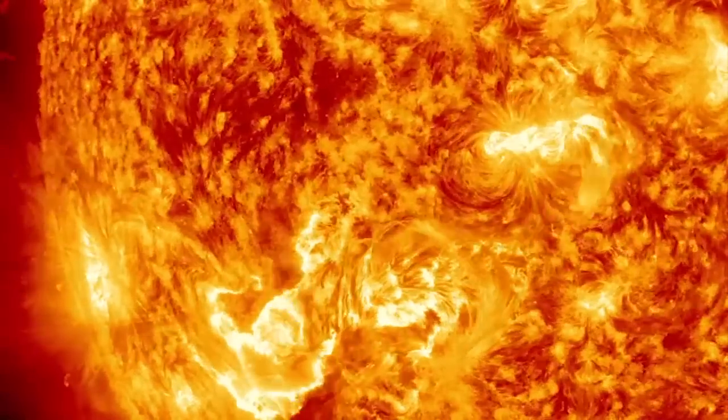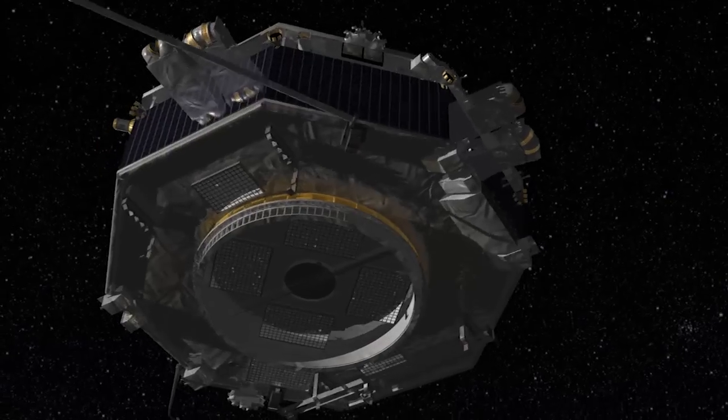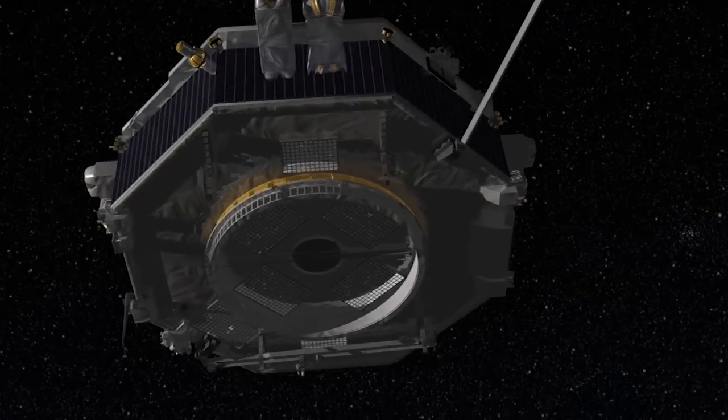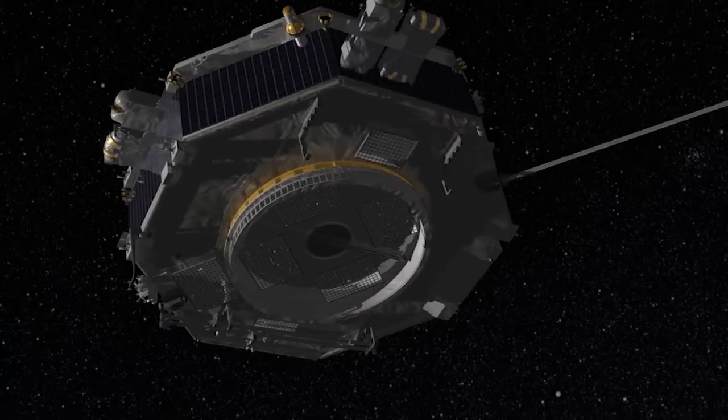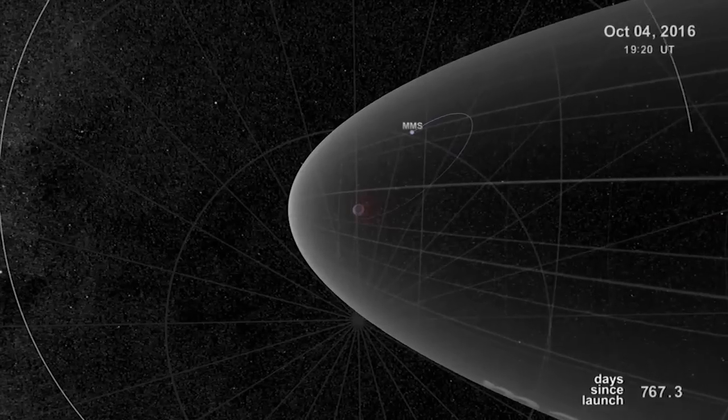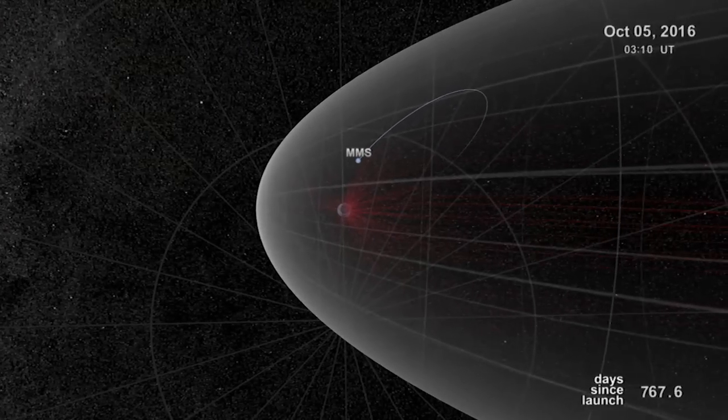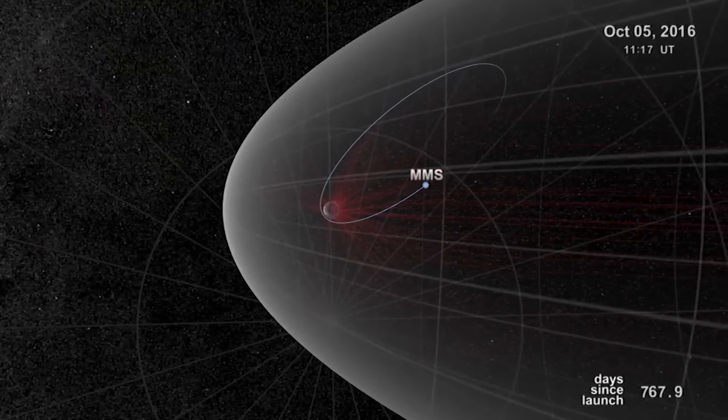You can think of it as kind of like a magnetic explosion. And the reason this is important is because these explosions drive a lot of the weather patterns that we see in the magnetosphere, what space scientists like to refer to as space weather. NASA's Magnetospheric Multiscale satellites, or MMS, should help scientists understand and better predict space weather patterns.